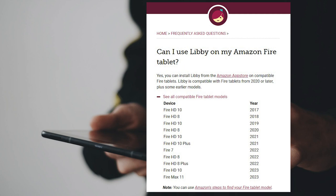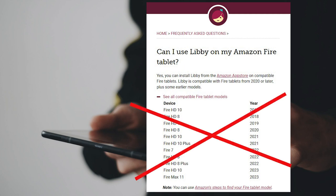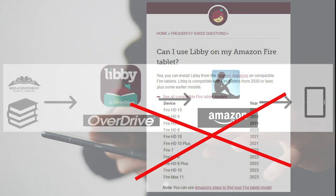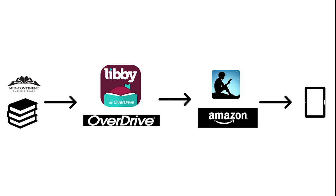However, some Amazon Fire tablets are not able to download the Libby app. Even if your device is not on this list, you can still enjoy free ebooks from the library. There is just going to be an extra step. We are going to access the library's collection by going through Libby or OverDrive, and the additional step is we are going to involve our Amazon account. That is what I am going to be showing you today.